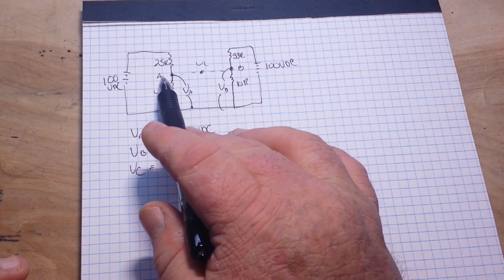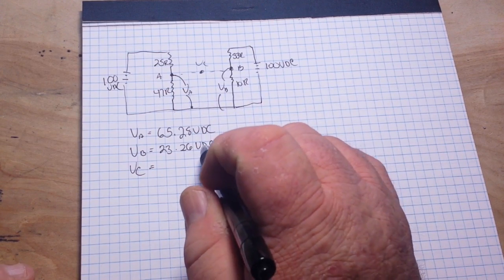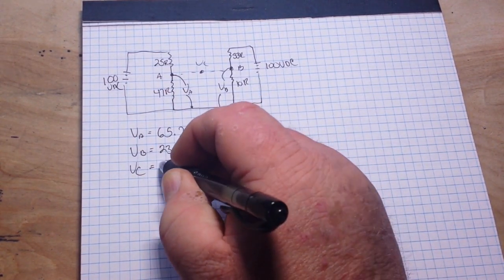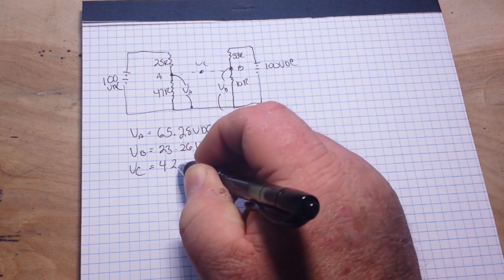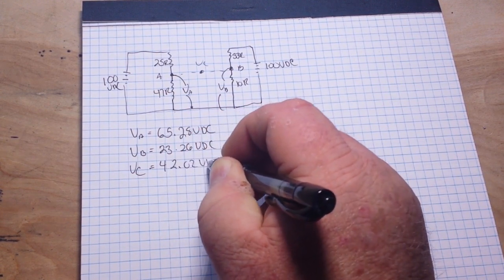Okay, just a small hint, A is positive relative to B. So, our voltage here is 42.02VDC.